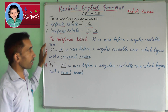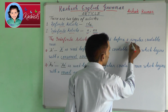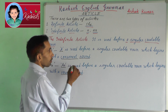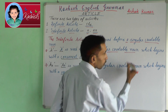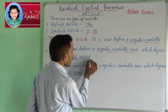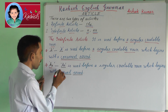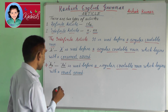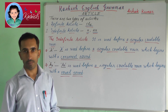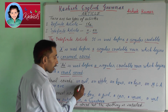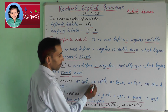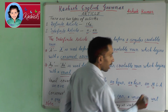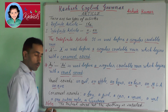The indefinite article is used before a singular countable noun. A is used before a singular countable noun which begins with a consonant sound. AN is used before a singular countable noun which begins with a vowel sound. For example: an owl, an apple, an hour, an air, an umbrella, an eve.